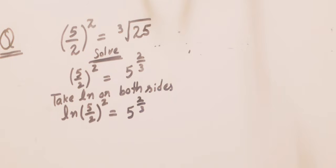For this purpose, z is in the form of a power, so it will be multiplied: z·ln(5/2) = (2/3)·ln(5).